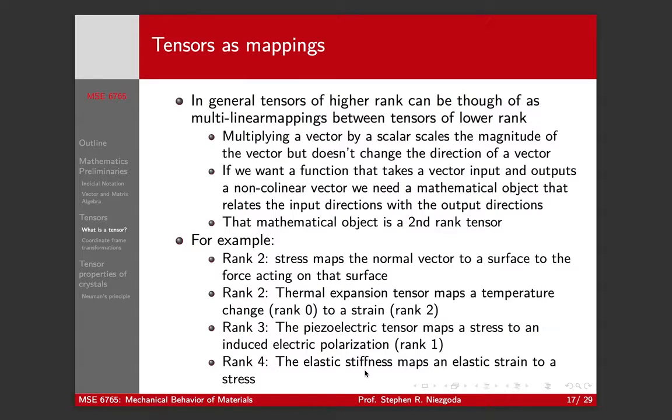If we want a function that takes a vector input and outputs a vector where we change the direction, that's a second rank tensor. So a second rank tensor maps a tensor of rank one or a vector onto another vector.